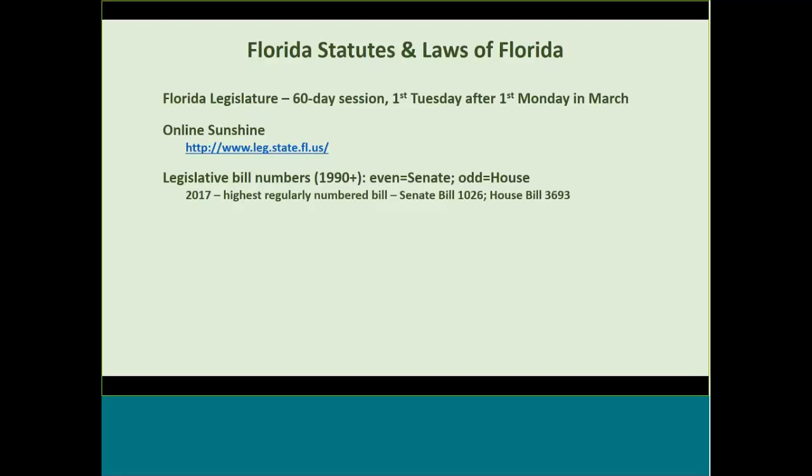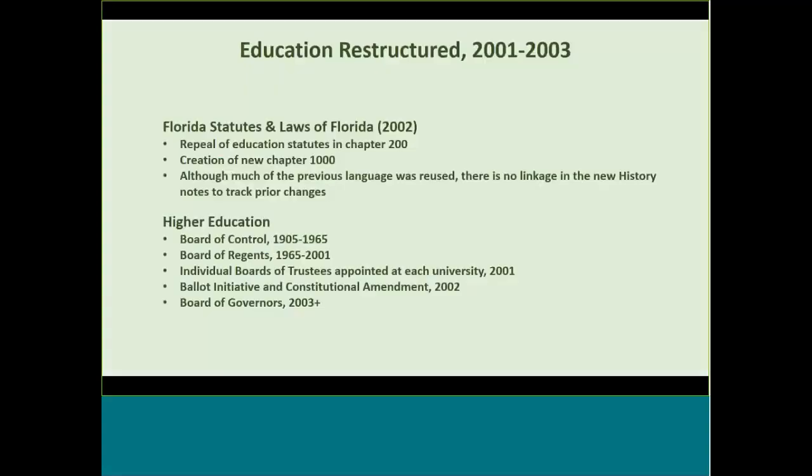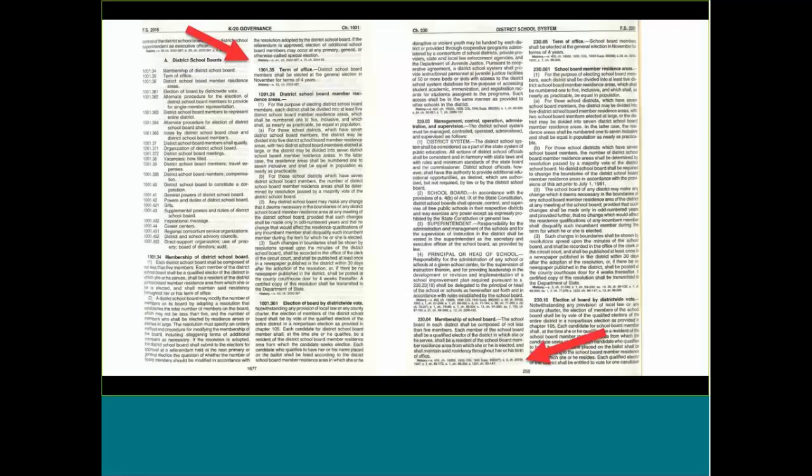Online Sunshine is a great website for the state of Florida. As of 1990, even-numbered bills are Senate bills and odd-numbered bills are House bills. The state of Florida restructured completely — statutes changed from Chapter 200 to Chapter 1000 numbering, with no tracking back. The state organization for higher education governing was done away with in 2001 and reestablished through a political initiative by Senator Graham to reestablish the Board of Governors. For example, looking at 2016 Florida statutes for school districts only shows history back to 2002 — you have to look at the 2001 Florida statutes to see earlier history of that same language.